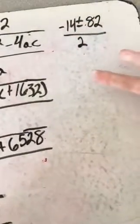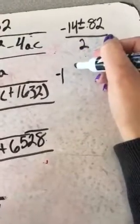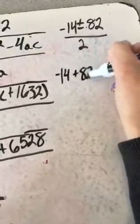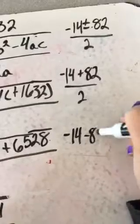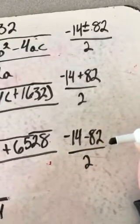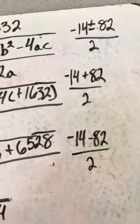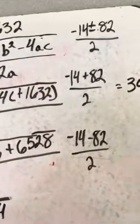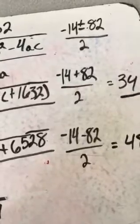So you're gonna have two different equations, not formulas. Negative 14 plus 82 divided by 2, and negative 14 minus 82 divided by 2. Alright, so this one is actually gonna end up being 34, and this one is actually gonna end up being 48.